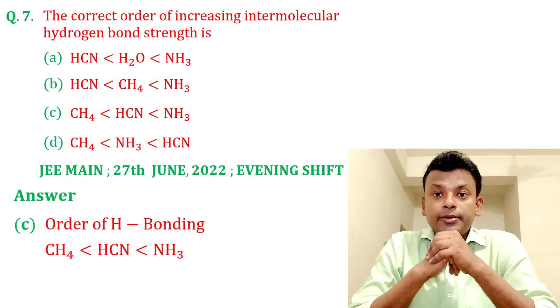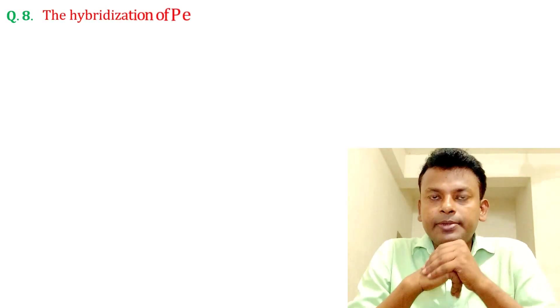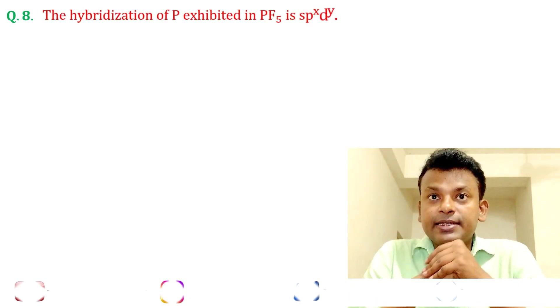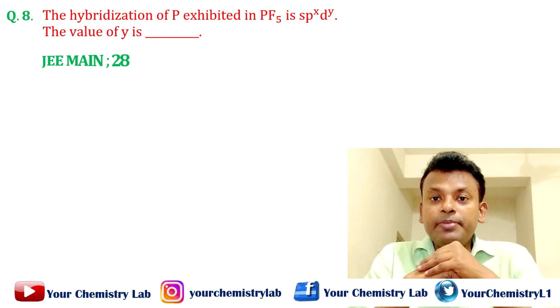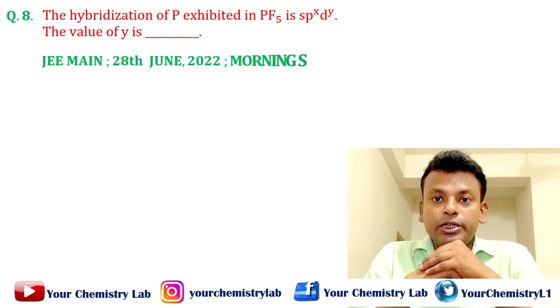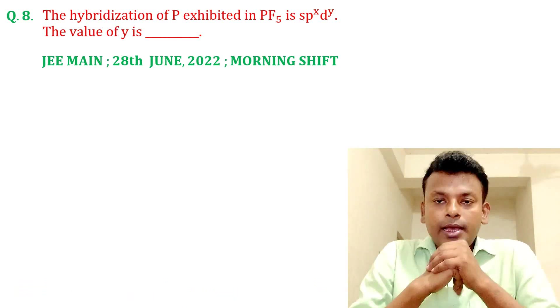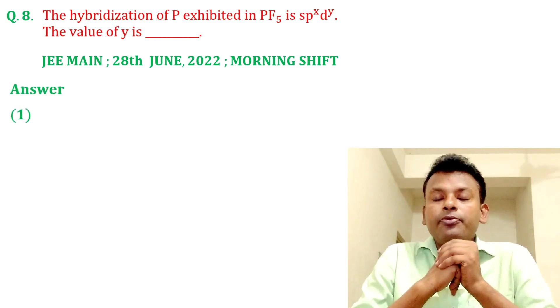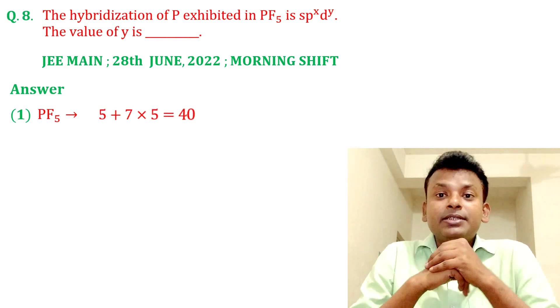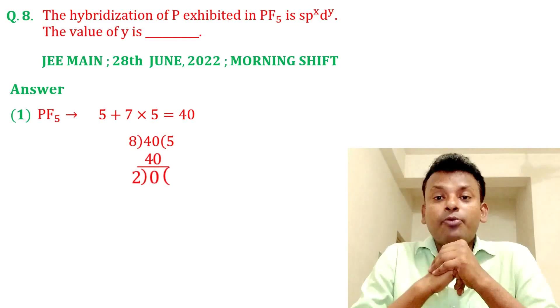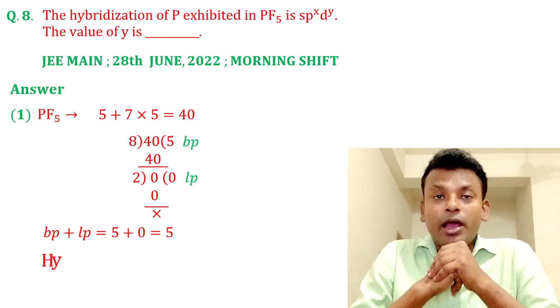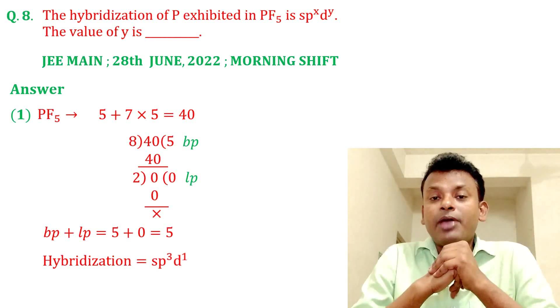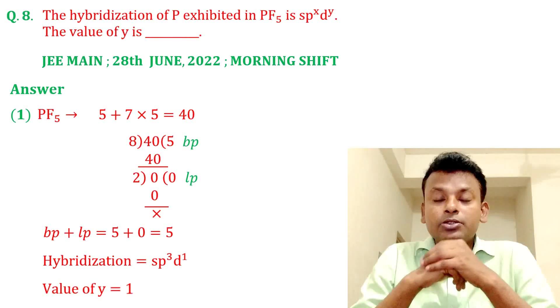Question 8: The hybridization of P exhibited in PF₅ is SPxDy — find the value of Y. This question was set in JEE Main 28th June 2022 morning shift. In PF₅, steric number = bond pair + lone pair = 5 + 0 = 5. So hybridization is sp³d¹. The value of Y is 1.